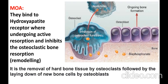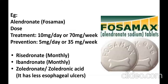The mechanism is inhibition of osteoclastic bone resorption function. For example, alendronate — brand name Fosamax. The treatment dose is 10 mg per day, or 70 mg once weekly. For prevention, the dose is 5 mg per day, or 35 mg once weekly.